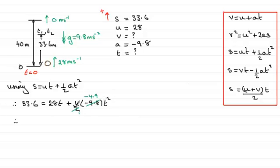So I'm going to add 4.9 T squared to both sides and also subtract 28 T from both sides. So that would give us 4.9 T squared minus 28 T plus the 33.6 and that equals zero.